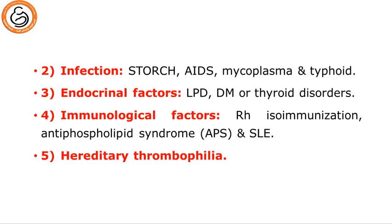Infection including TORCH infection, HIV, mycoplasma, and typhoid. Endocrinal factors, especially luteal phase defect, uncontrolled diabetes mellitus, thyroid disorders whether hypo or hyperthyroidism. The immunological factors are an important cause of miscarriage, like Rh isoimmunization, the important antiphospholipid syndrome, systemic lupus erythematosus, and other immunological factors. For hereditary thrombophilia, which means genetic defect in the factors of coagulation, results in coagulation in the vasculature of the placenta leading to miscarriage.